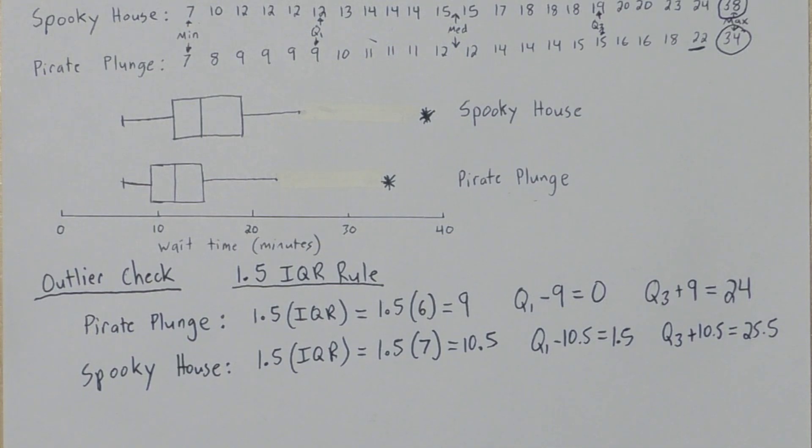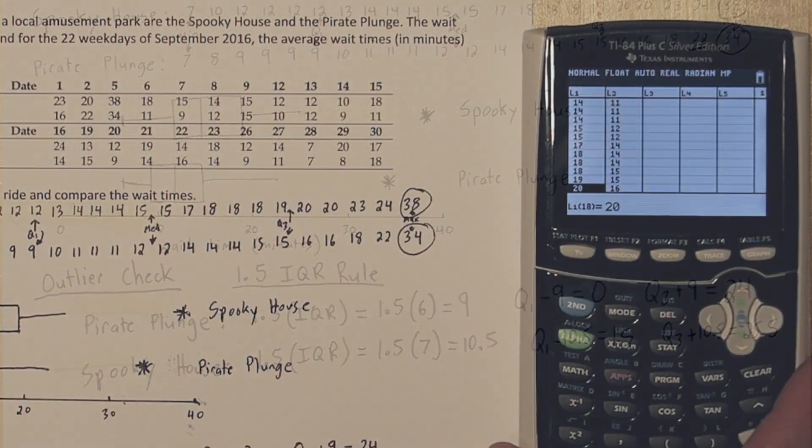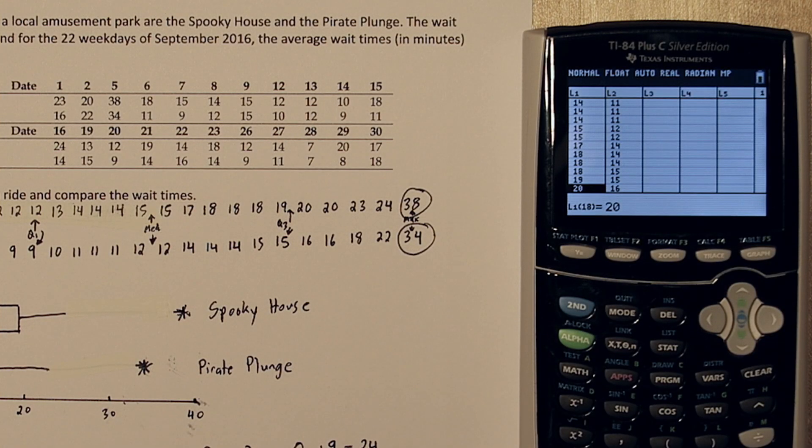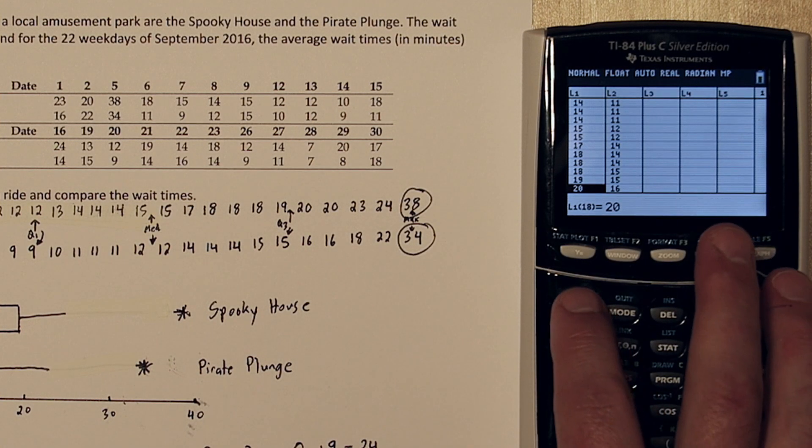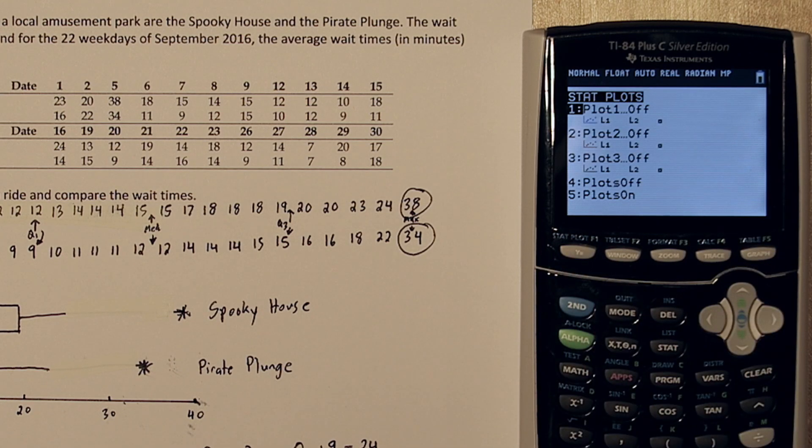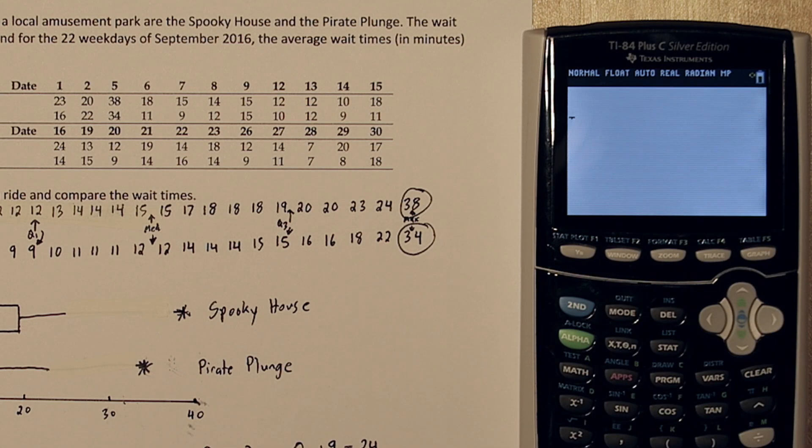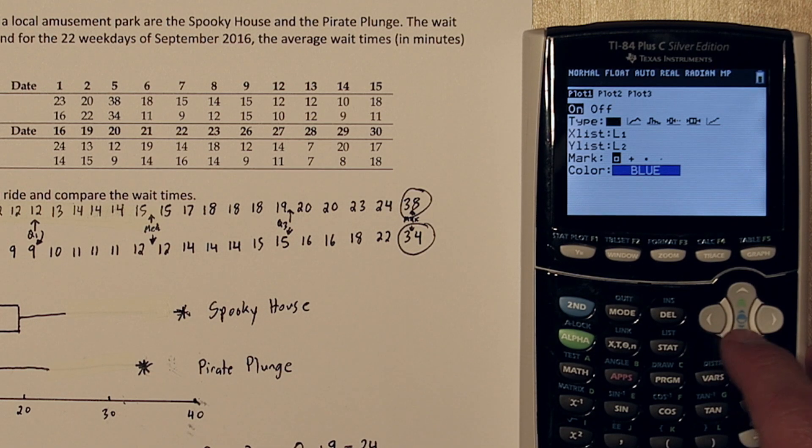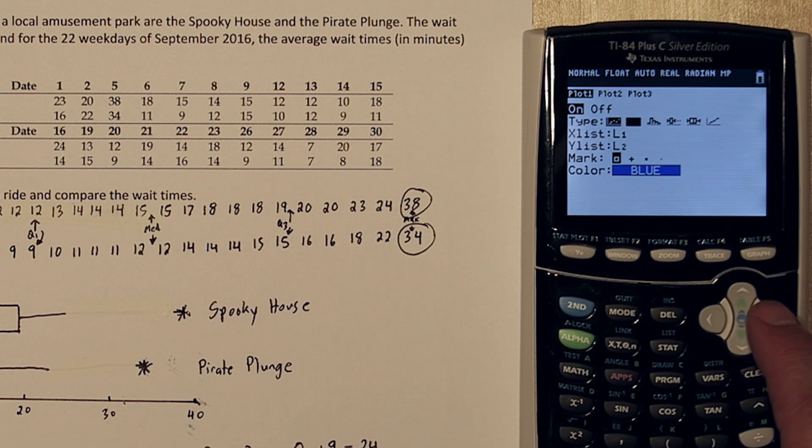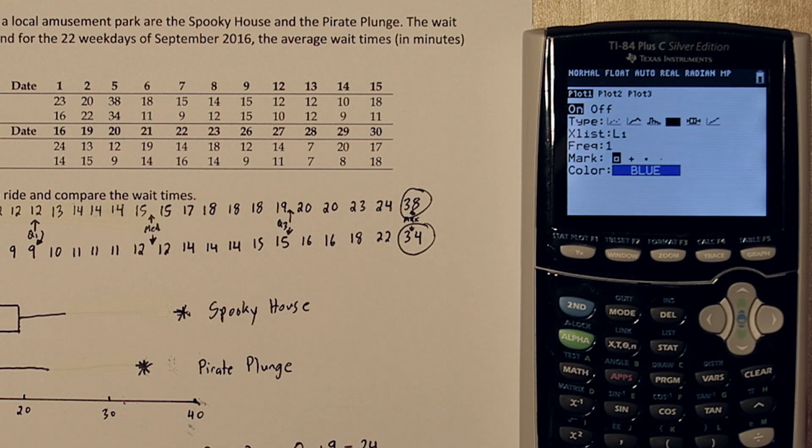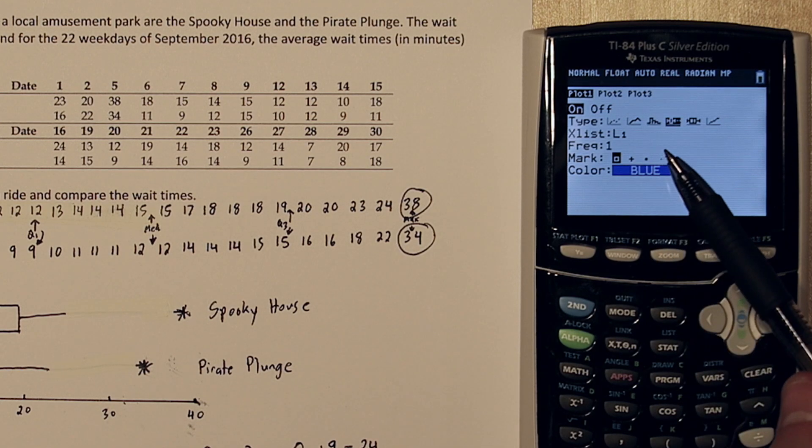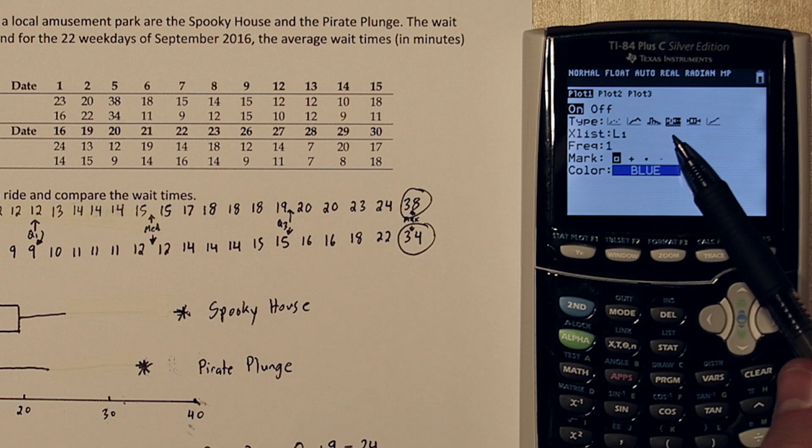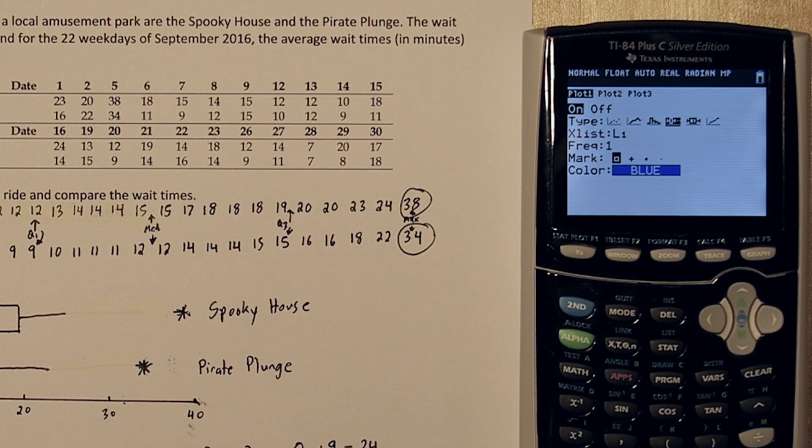Before we move on to Part B, let me show you how to do this on the calculator. We've already input the data into List 1 and List 2. If you press 2nd and Y equals, you get to the Stat Plot menu. Let's push Enter on the first one. We're going to turn the plot on, and we're going to go over to this fourth option right here. You actually have two box plot options. The first one's a modified box plot, and the second one's a regular box plot.